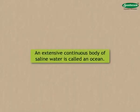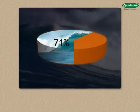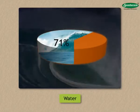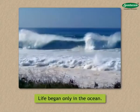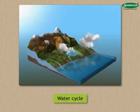Let us begin with the study of oceans. An extensive continuous body of saline water is called an ocean. 71% of the earth's surface is occupied by water. Life began only in the ocean. The water cycle also begins and ends in the ocean.